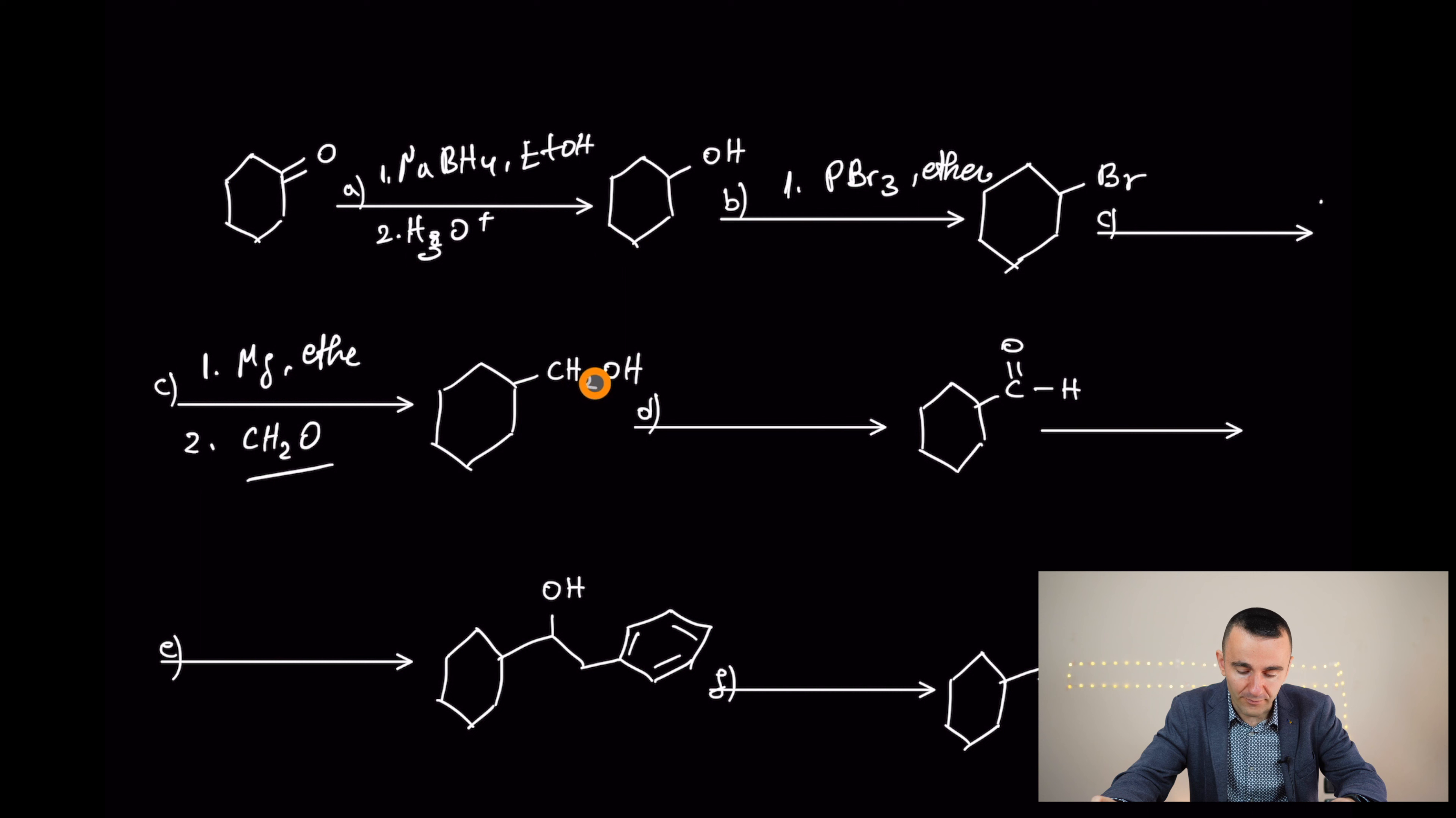In this case, it's oxidation. In this case, it's oxidation. As I said, you can use, I'm using, for example, here, Dess-Martin periodinane. Dess-Martin periodinane in dichloromethane. Right? To convert that to aldehyde.